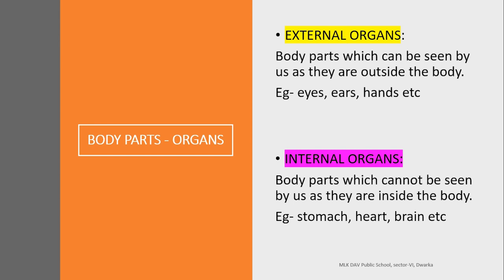We all know that our body has different parts and they are called organs. Some of the organs which are outside the body and can be seen by us are called external organs — for example, your eyes, hands, nose, back, head, etc. And some body parts cannot be seen by us because they are inside our body. They are called internal organs — for example, stomach, heart, brain, etc.